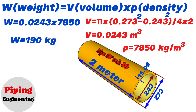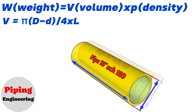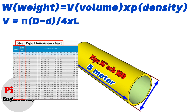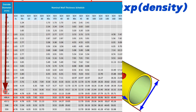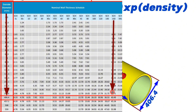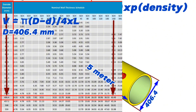Now let's calculate the weight of a 16 inch iron pipe with a wall thickness of schedule 160 and a length of 5 meters. Since we already know the calculation steps, we will move quickly. Looking at the row for nominal pipe size 16 inch in the pipe size chart, we find that the outer diameter of the 16 inch schedule 160 pipe is 406.4 millimeters and the wall thickness is 40.49 millimeters.